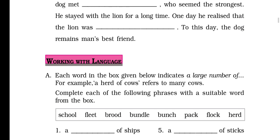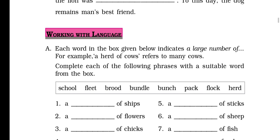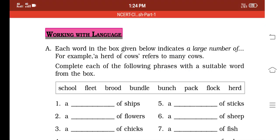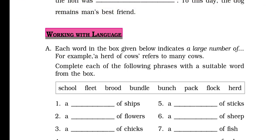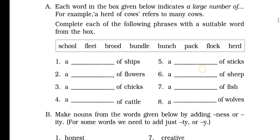Then, working with the languages: Each word in this box given below indicates a large number of something. For example, a herd of cows refers to many cows. Last year we learned nouns. How do you remember? Common noun, proper noun, abstract noun, and collective noun. This is also a type of noun called collective noun. Why is it called collective noun? Because it is talking about many things. Many nouns are coming together forming a group.